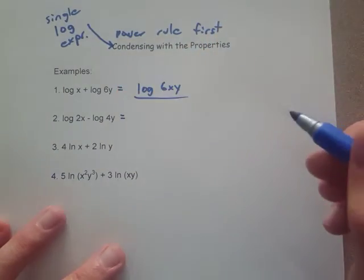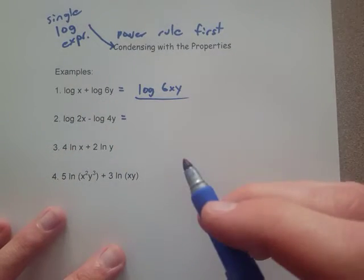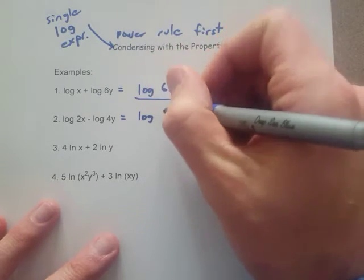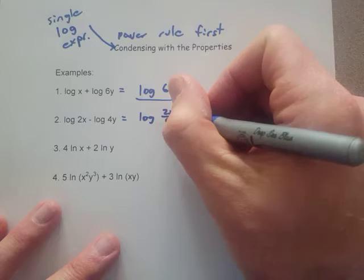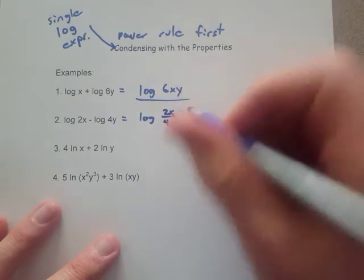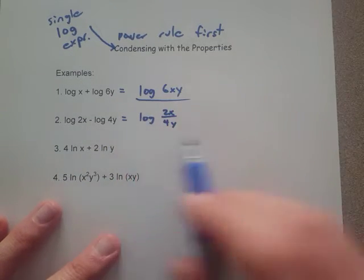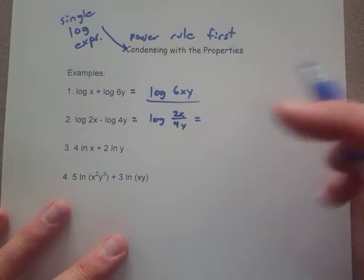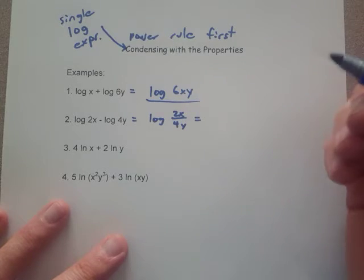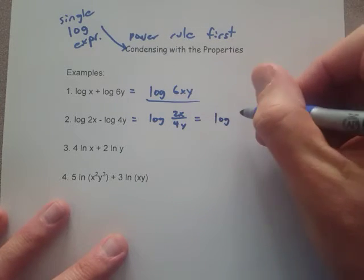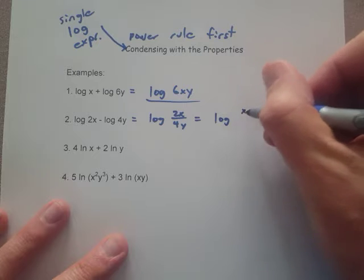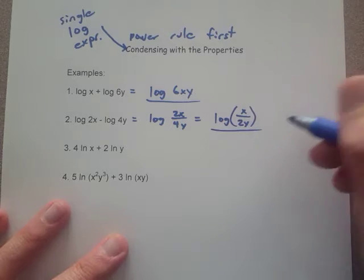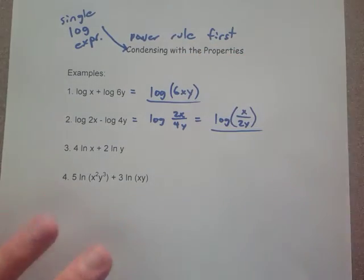For this second one, it is again subtraction goes with division, and so then we get log of 2x over 4y. Remember, there's only one log. We're condensing it as a single log expression. The only other thing you can do with this one really is simplify the fraction: 2 over 4 goes to 1 over 2, and so we can change this to log of x over 2y. Okay, so that is something that we can finish with for number 2.